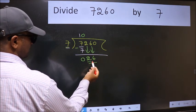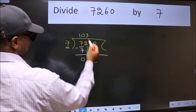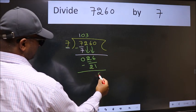So 26. A number close to 26 in the 7 table is 7 times 3 is 21. Now we subtract and get 5.